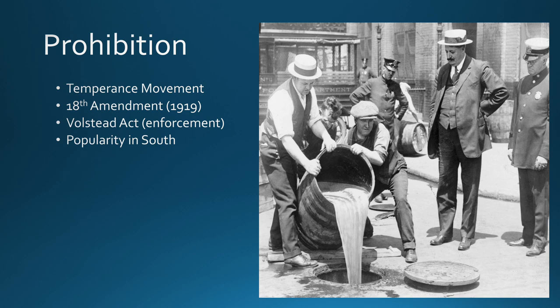Prohibition hit some popularity in the South — probably not for great reasons. Whites in the South liked Prohibition because it prohibited Blacks from being able to drink alcohol. The other area where Prohibition was relatively popular was in the West. If you recall, the West had saloons, lawlessness, prostitution, and gambling, and alcohol was seen as the root of all those problems. So getting rid of it was seen as good, and there was a lot of momentum when this first came out.